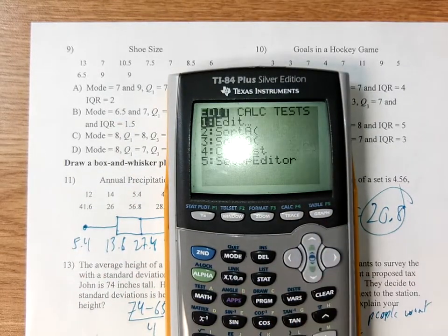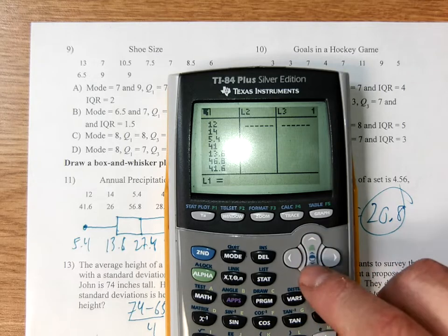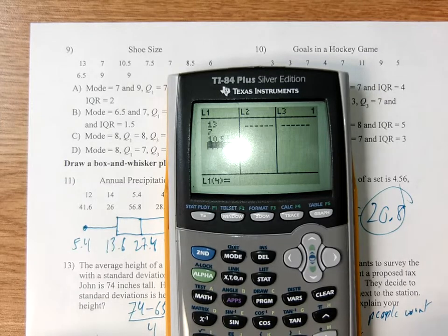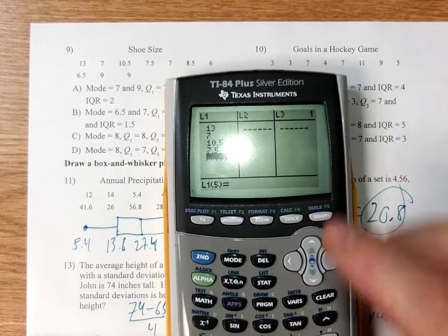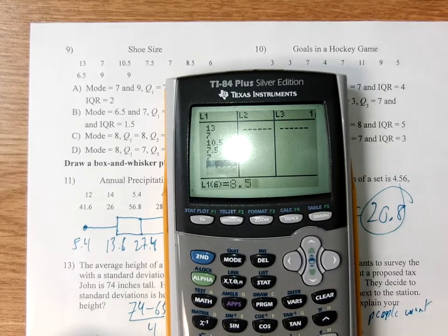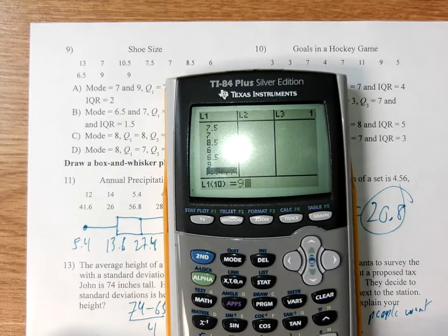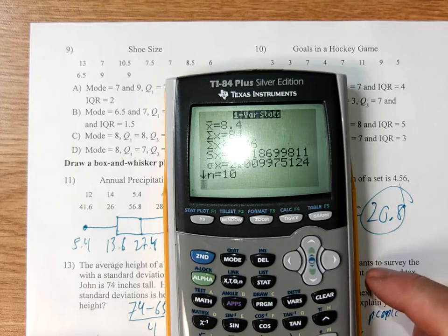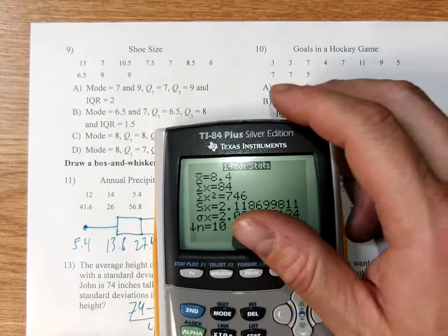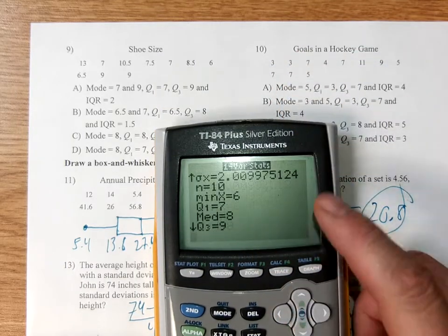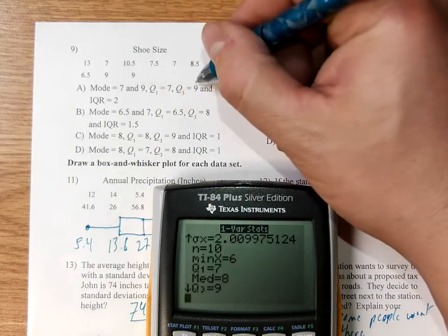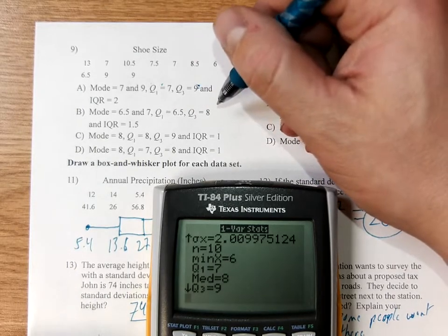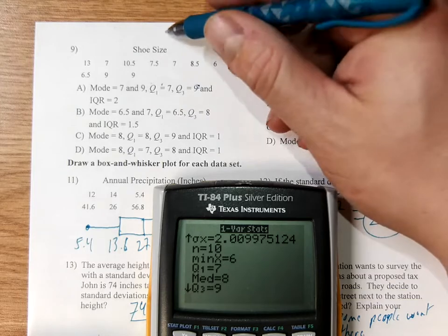So stat, edit, we clear by going to the top and pushing clear and pushing down. They each have 10 numbers. So 13, 7, 10.5, 7.5, 7, 8.5, 6, 6.5, 9, and 9. We'll quit out, calculate the one variable stats. What did I want here? I wanted the quartile 1 and quartile 3, that's the main thing. 7 and 9. Quartile 1 is 7, quartile 3 is 9. And then of course the interquartile range is 2 and the mode is 7 because there's two 7s.